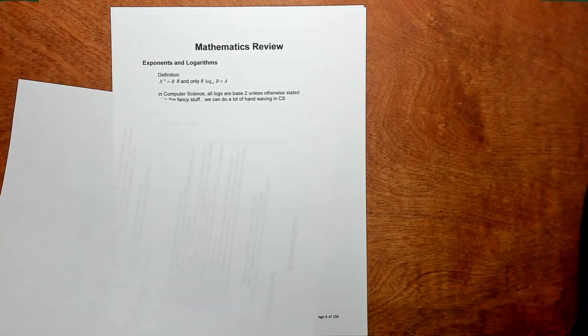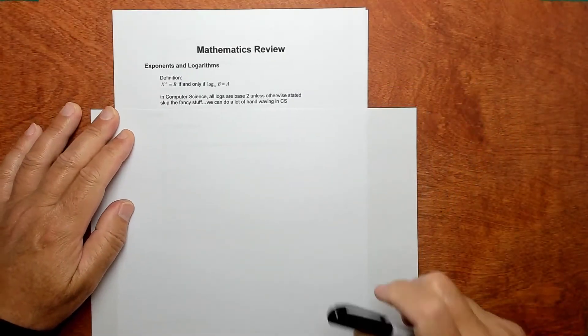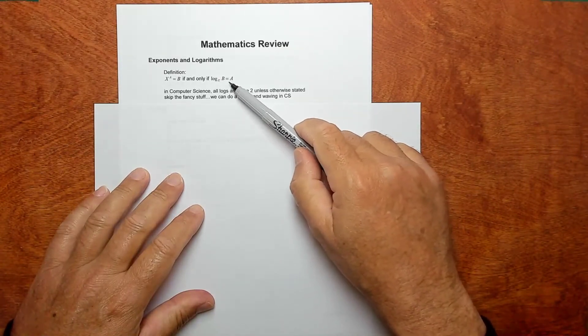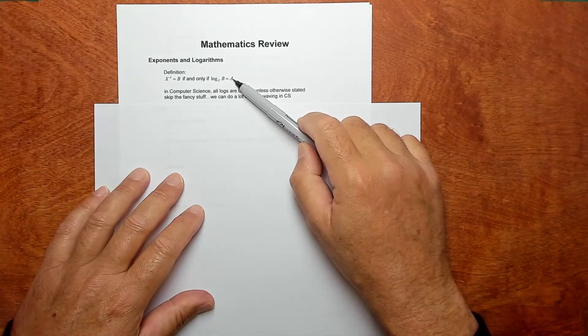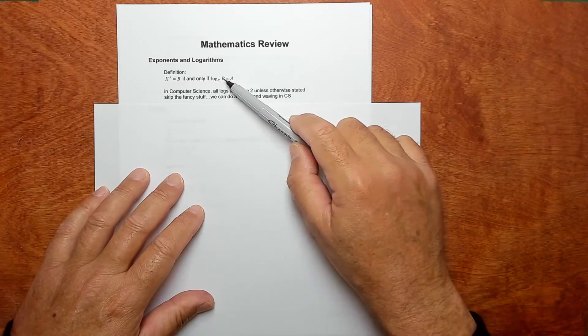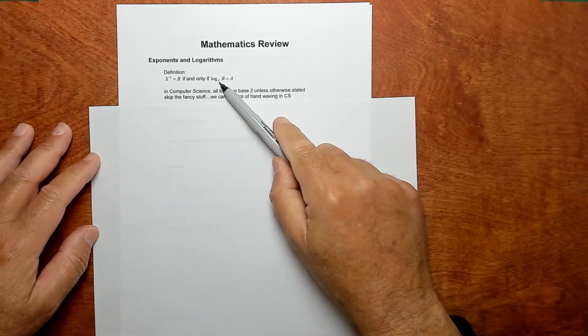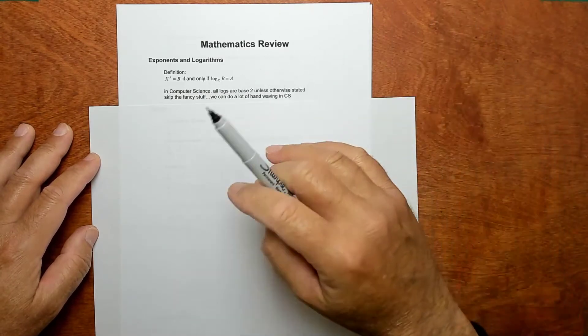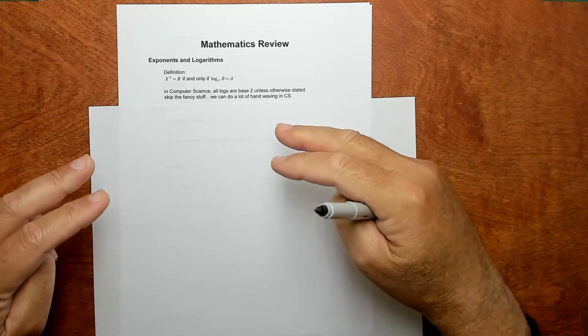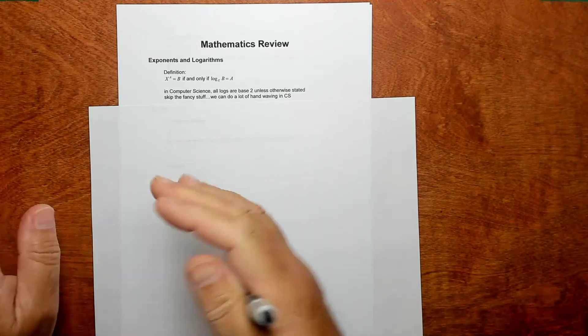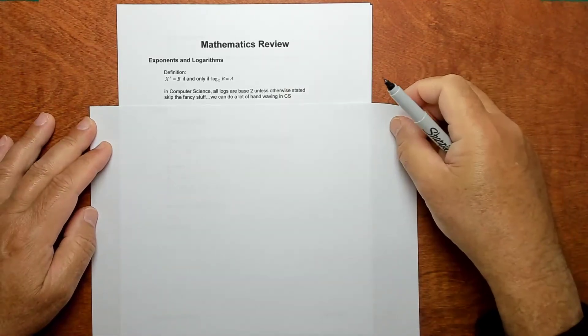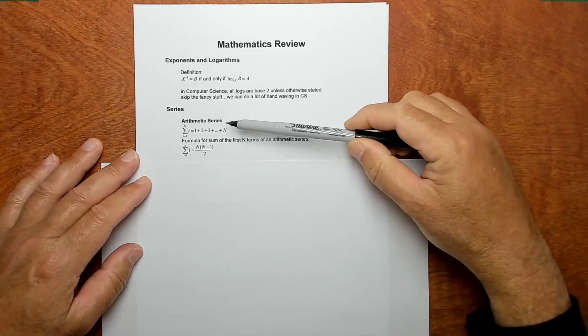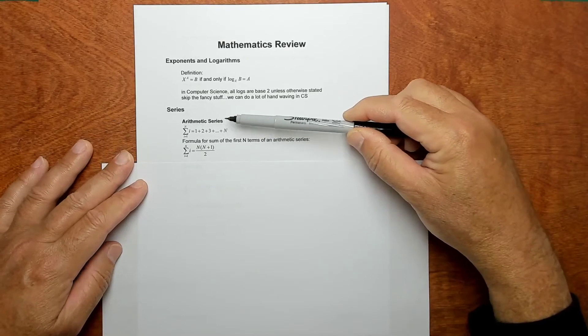So first thing is a logarithm. The definition of a logarithm is kind of the inverse of an exponent. So if you have an exponent x to the a equals b, then the logarithm is the inverse. That is, log x of b equals a. So a is the exponent to which you raise the base x in order to get b. And x, the base, is always 2 in computer science. That is, if we just say log, it's assumed that it's base 2. Unlike regular math, although I like to think computers are now regular math and all the other stuff is just like ancient math. But in regular math, they assume base 10. But we assume base 2 because we're modern.